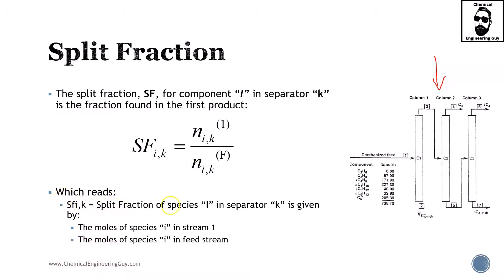Which reads: split fraction of species i in separator k is given by the moles of species i in stream 1, divided by the moles of species i in the feed stream. So let's focus on this example. We have C1, C2, and C3 - those are the k's.